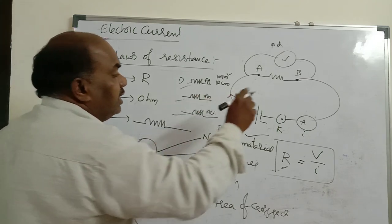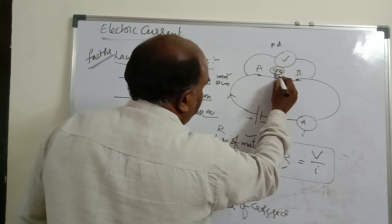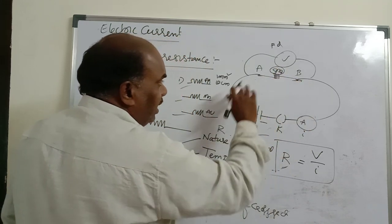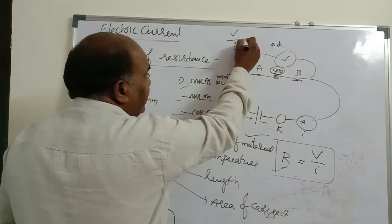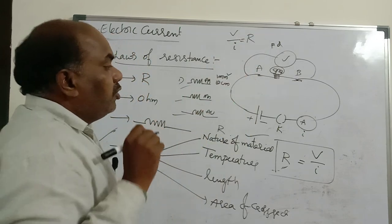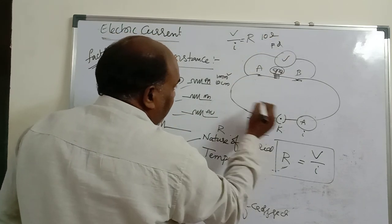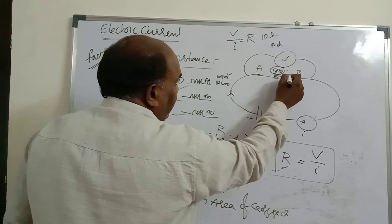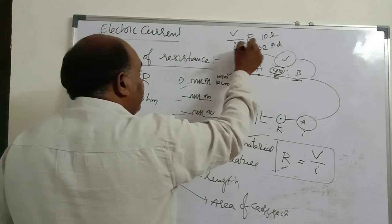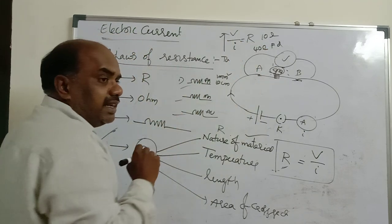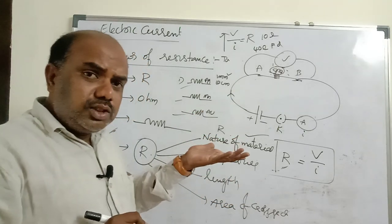For temperature: connect a bulb in the circuit. First, with no current flowing, note the V/I ratio — say it is 10 ohms. Then switch on the key; the bulb glows and heats up. Measure V/I again — now it may be 40 ohms. Temperature increased and V/I ratio increased, so resistance depends on temperature. If temperature increases, resistance also increases.